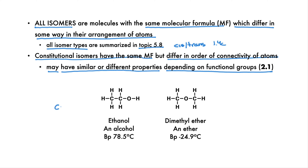There are two constitutional isomers of C2H6O. Ethanol is in the alcohol functional group family and has a boiling point of 78.5 degrees Celsius. Alcohols tend to have unusually high boiling points. Dimethyl ether, which is in the ether functional group family, has a boiling point of minus 24.9 degrees Celsius, which is almost 100 degrees lower.